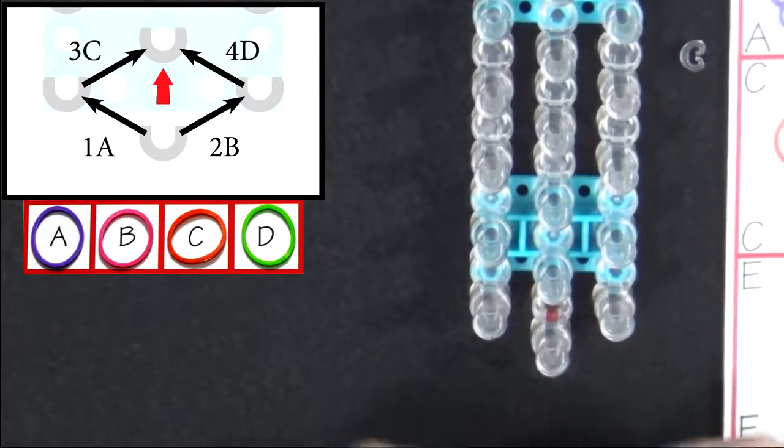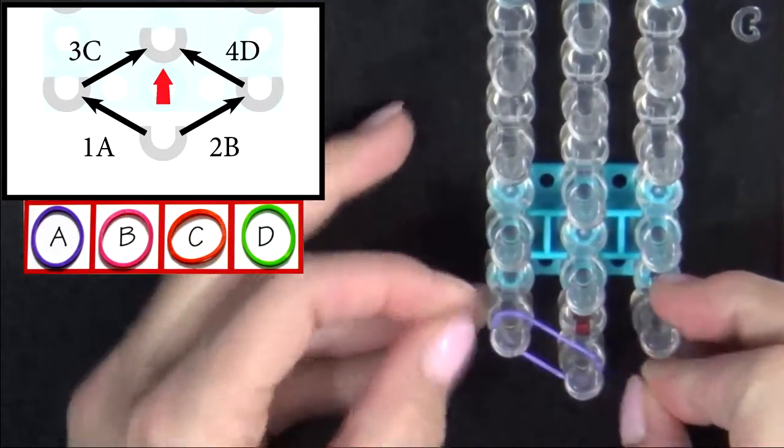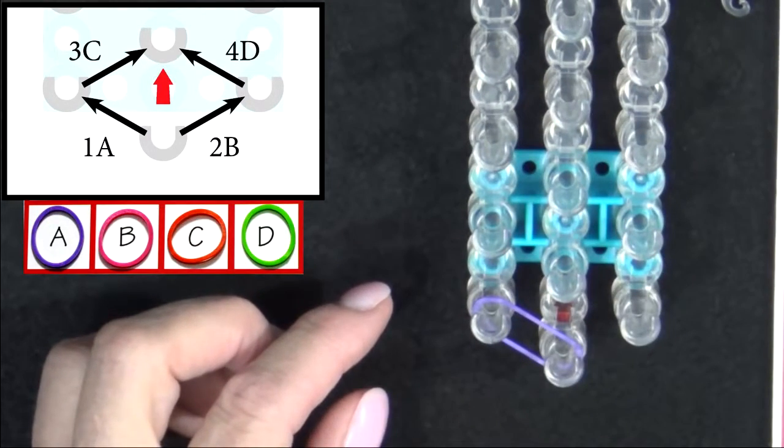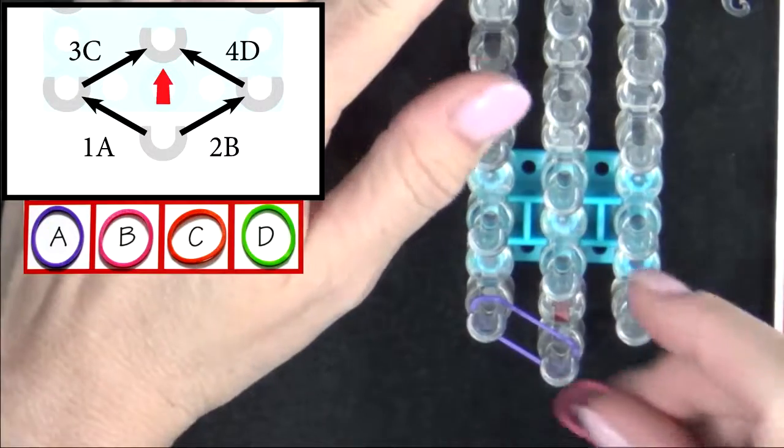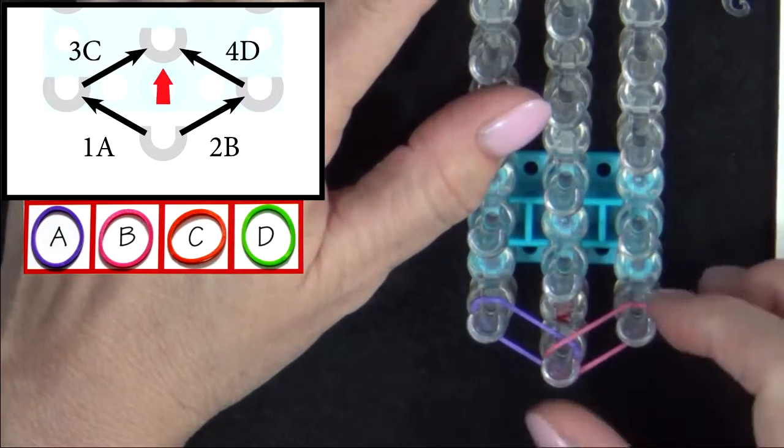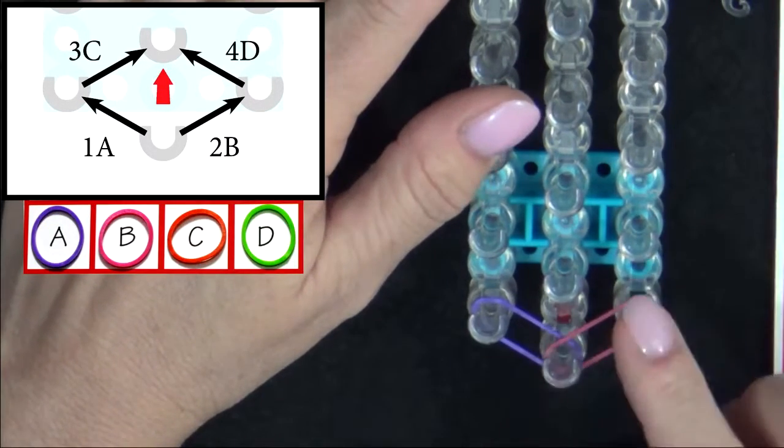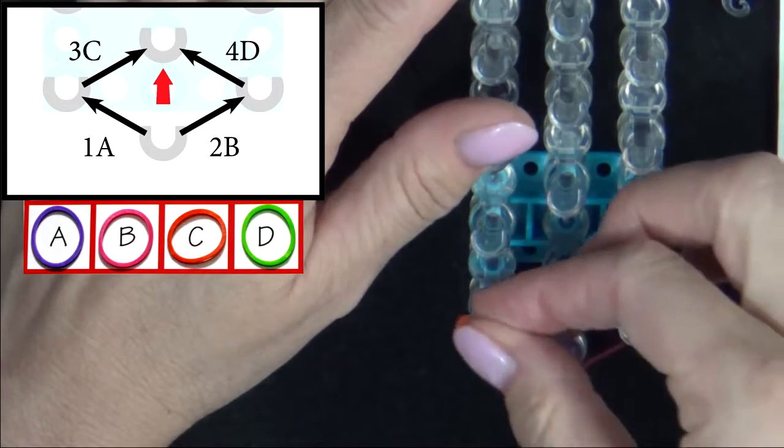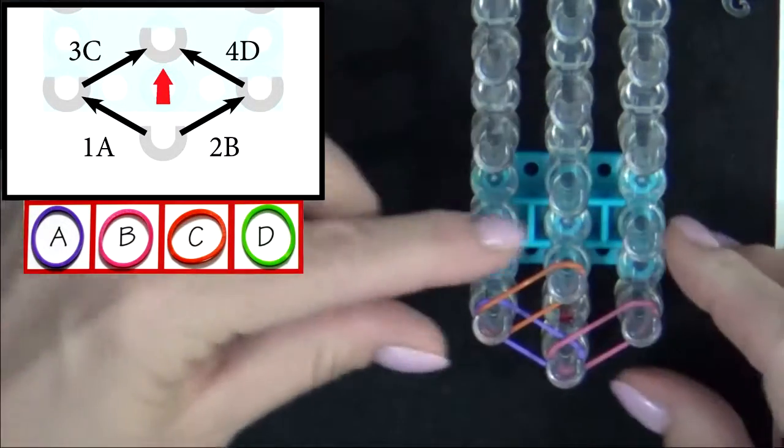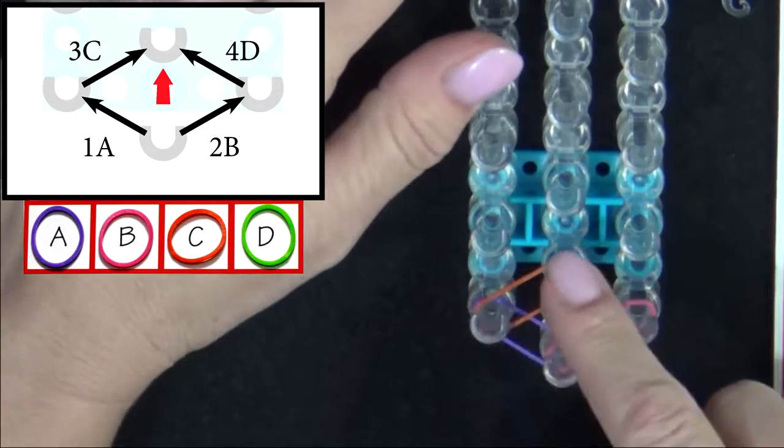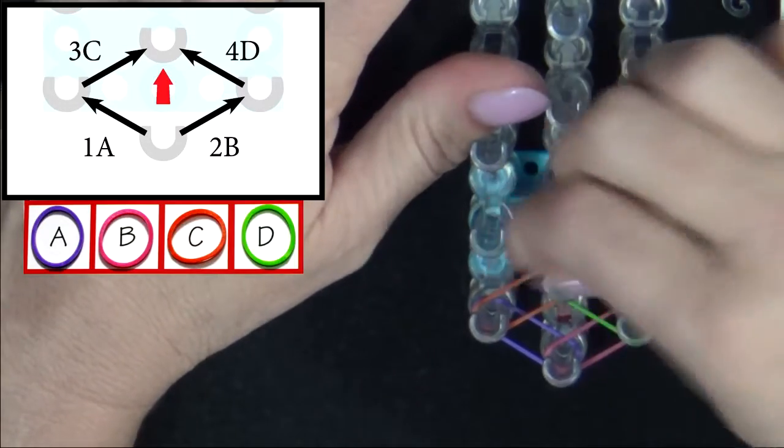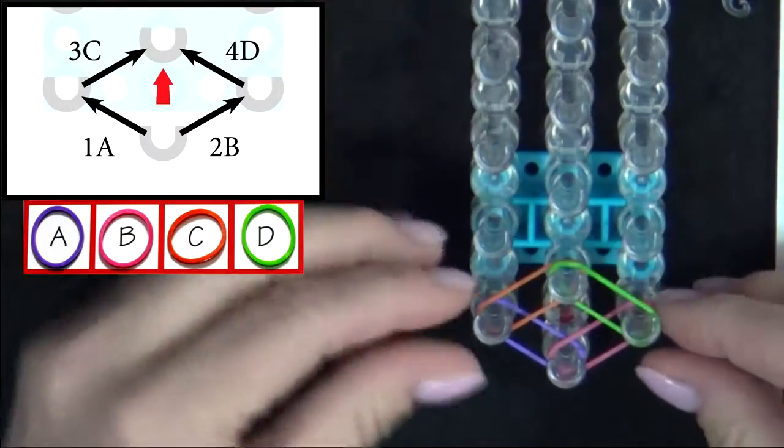The first band that we place will be 1A. Our second band will move from the center pin out to the right. That's 2B. 3C will be placed from the left to the center. And 4D will be placed from the right to the center.